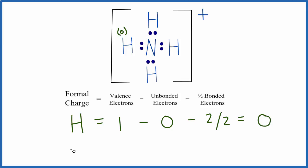So for the nitrogen in the center, nitrogen is in group 15, sometimes called 5A, it has five valence electrons. We'll subtract the unbonded electrons. All of the electrons are bonded, they're all involved in a chemical bond with the hydrogen atoms. So we don't have any, so that's zero. And then we'll take half of the bonded electrons.